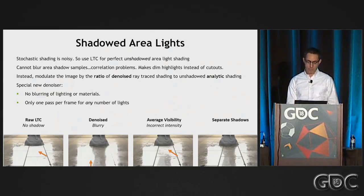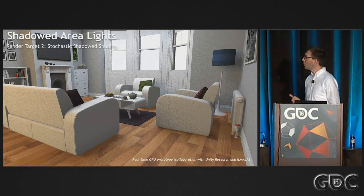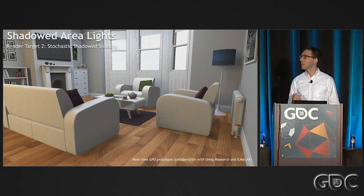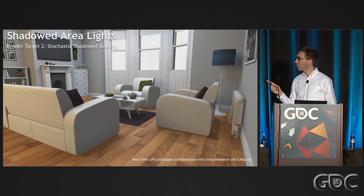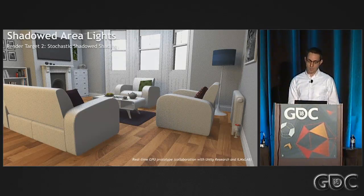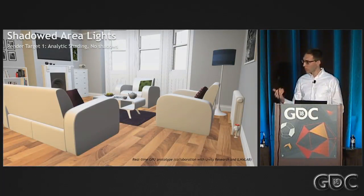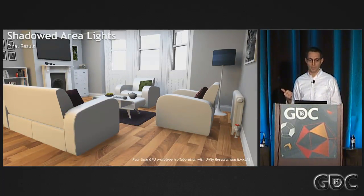A hybrid algorithm solves this — I think it's best illustrated through pictures. The algorithm first outputs the unshadowed area lighting solution using linearly transformed cosines. As a second output, it produces a noisy but correctly sampled shadowing — in this case maybe only one shadow sample per pixel, but evaluating the full BRDF. Then by filtering that noisy picture and dividing the two — dividing the analytical solution by this filtered, correctly estimated solution — you get a shadowing term that is a very good correction term for your shadows, unlike the simple averaged visibility approach. So if you take this shadowing term, start with your unshadowed image and apply it, you get stable area light shadows that work on both diffuse and glossy surfaces.